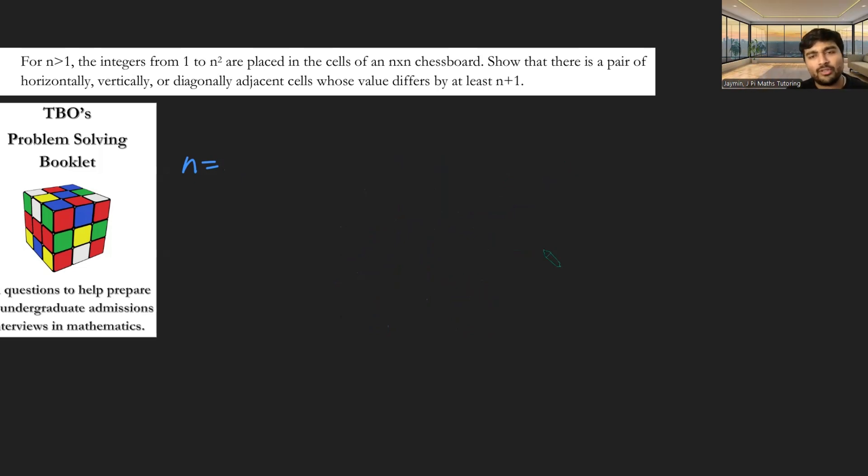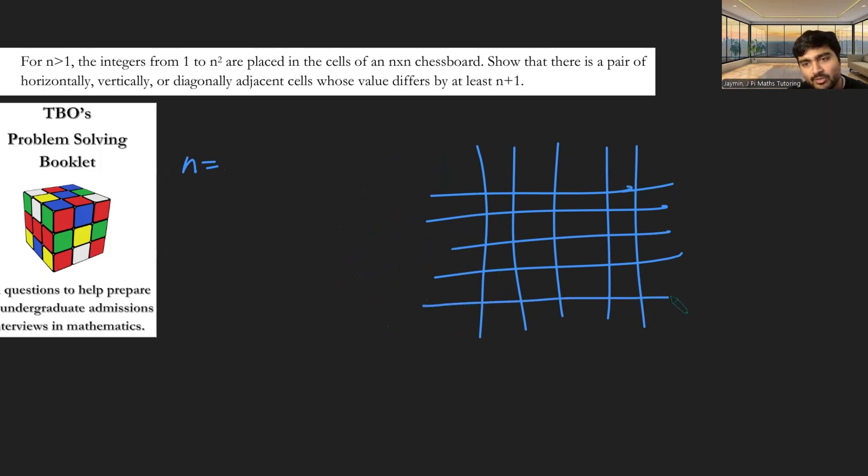And we're going to just consider a move on a chessboard. So if we have a chessboard like this, something like this. So this is a 5×5, oh no, 6×6 even chessboard. I think, I don't know, one more horizontal. There we go, 6×6, something like this.